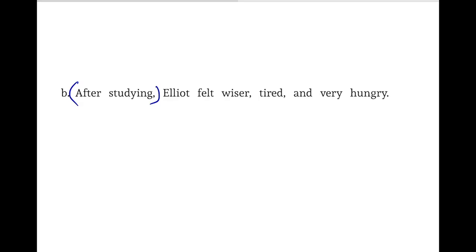So we'll look at the principal elements, which will involve our subject and verb, and any objects to that verb. We see that Eliot is our subject — he's the one doing the action, or receiving action, or connected to a linking verb, which is what we have with 'felt.' We will underline Eliot with one line, and our verb with two.